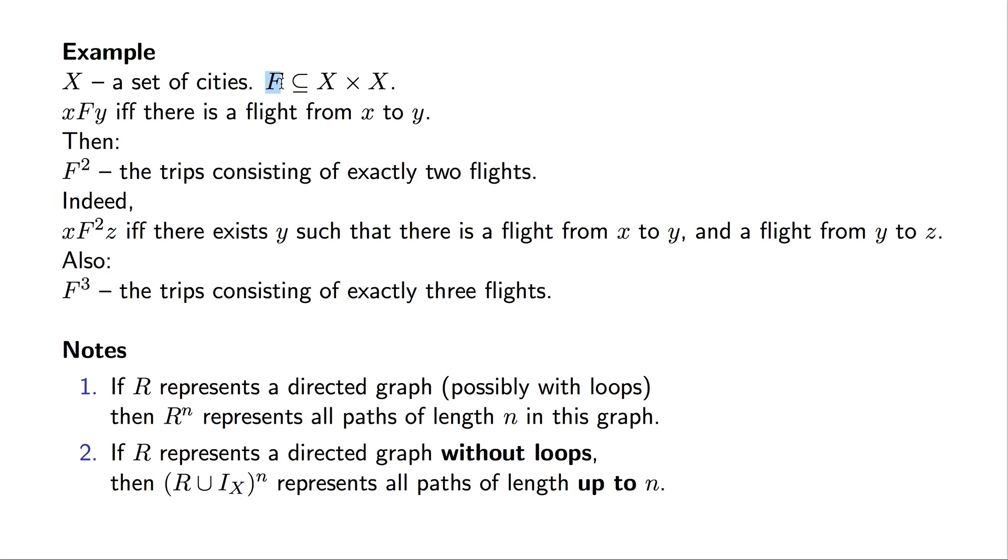Let F be a binary relation on X such that x is related to y if and only if there exists a flight from x to y. Then F to the second power describes the trips consisting of exactly two flights.